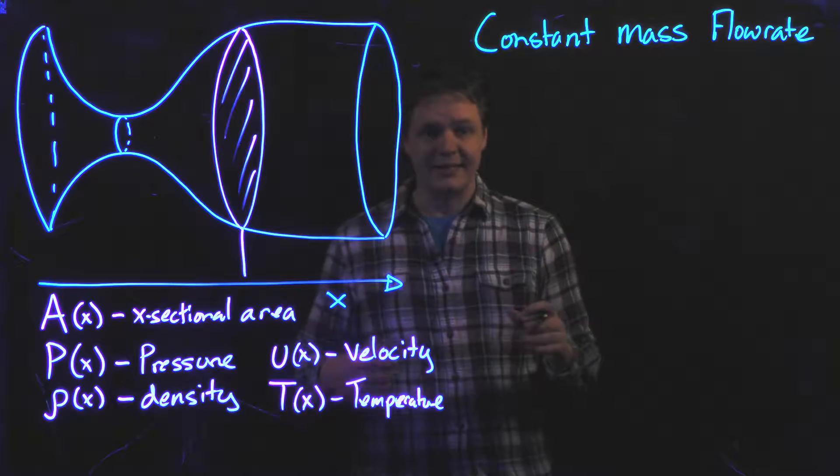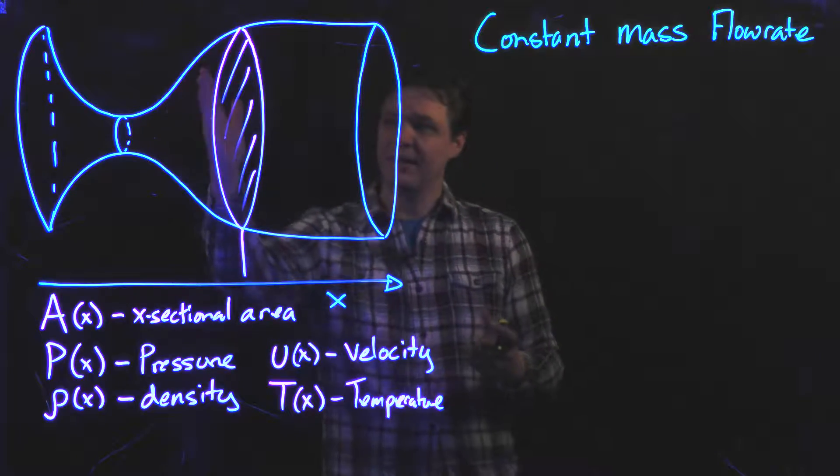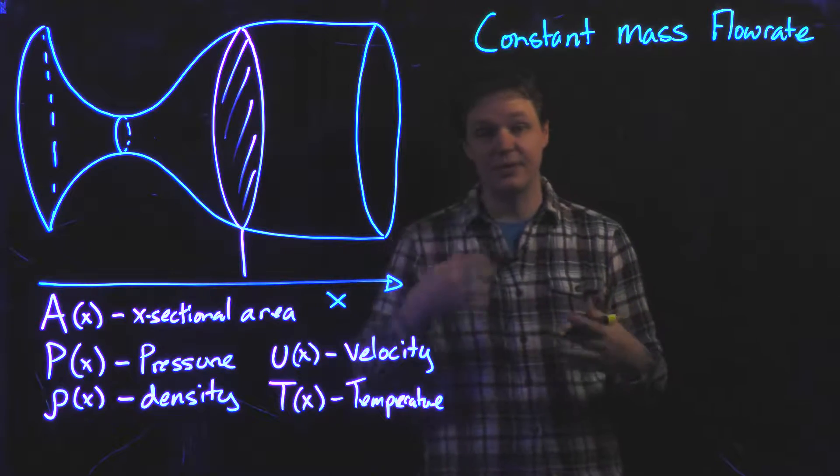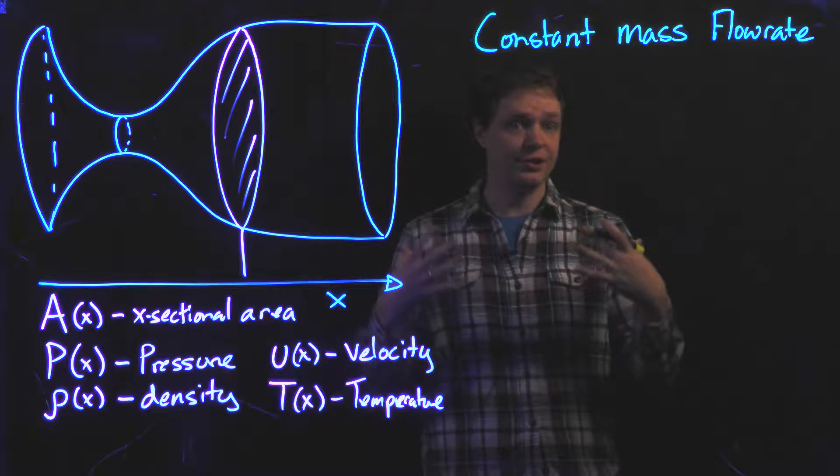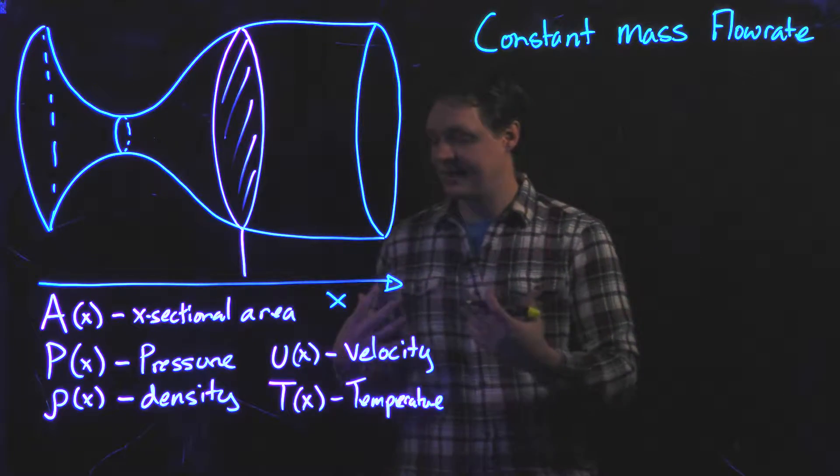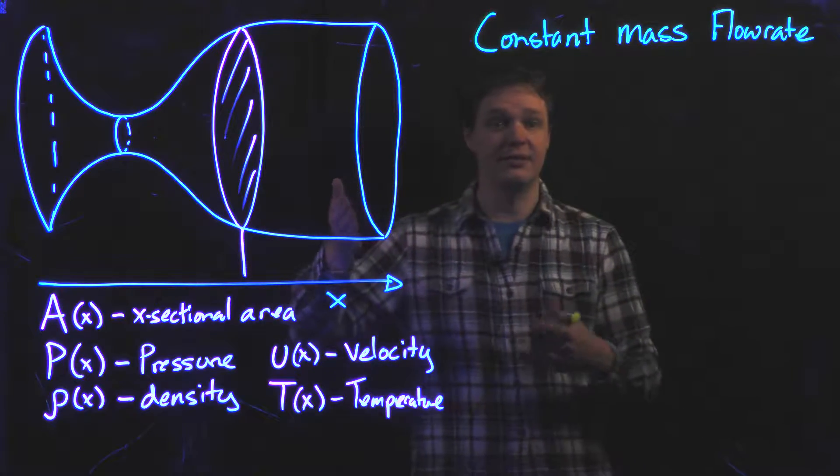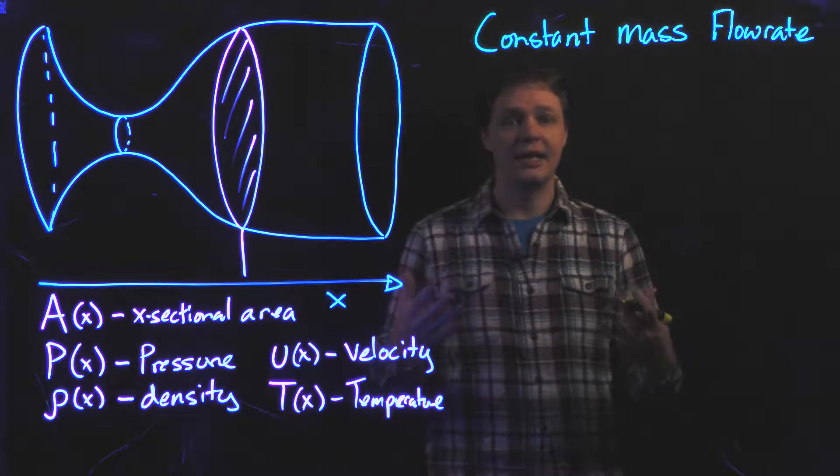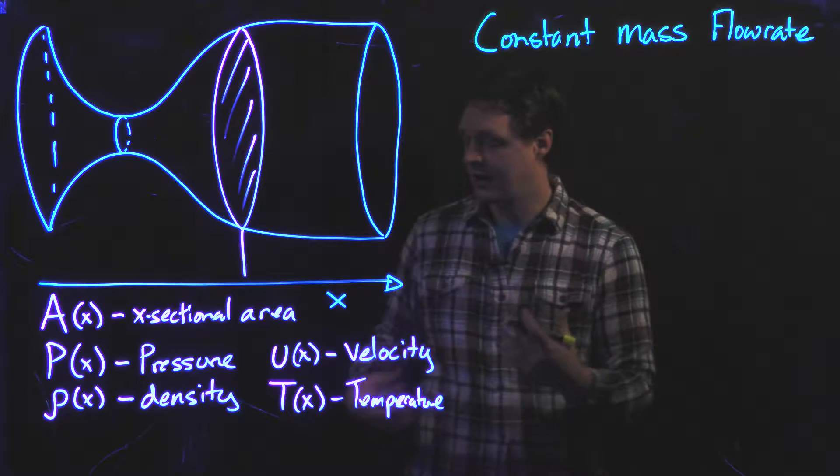The mass flow rate is how much mass is moving through any given cross-section of the nozzle at any time. The mass flow rate should be a function of x, but we're going to say that it is constant throughout the entire nozzle. Hopefully, that makes sense, because any mass that comes in has to go out in a steady state functioning of this system.